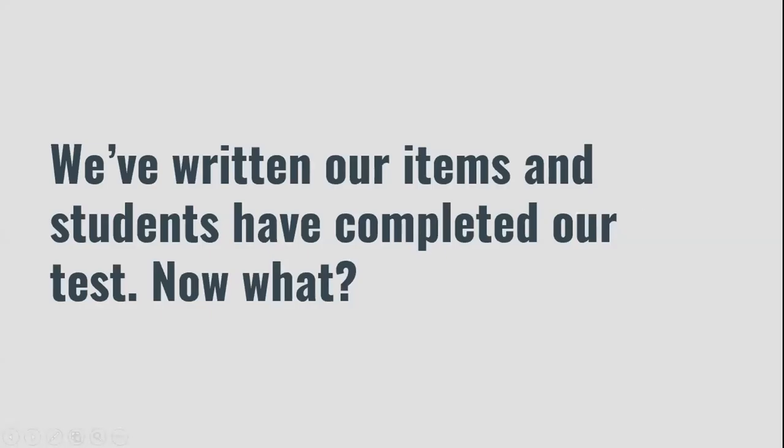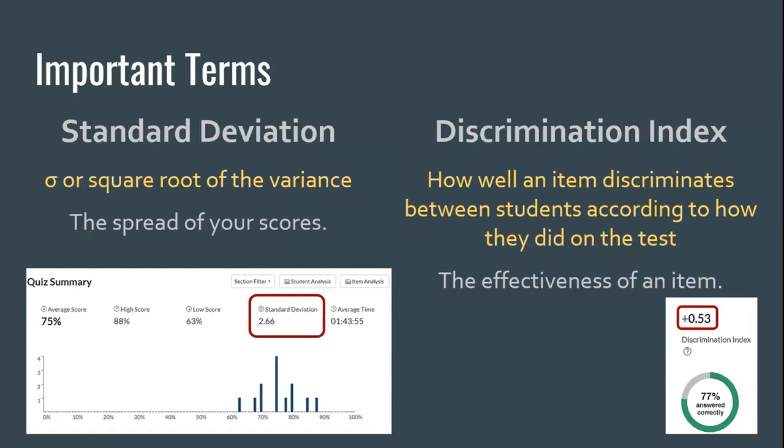So we've written our items and students have completed our test — now what? Now we're going to get into actually using Canvas for the statistics that are available. On the quiz summary screen, standard deviation is the spread of your scores — sigma, or the square root of the variance. For example, a quiz summary might show: average score 75, high score 88, low score 63, standard deviation 2.66, and average time 1 hour 43 minutes 55 seconds, along with a bar chart showing the distribution of scores by percentage.